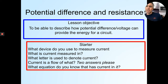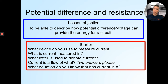Okay, it's science o'clock — time for a new lesson. Carrying on from the last lesson where we talked about current and resistance, today we're doing potential difference and resistance, and we're going to be able to describe how potential difference (voltage) can provide the energy for a circuit. To start us off, we're going to look at some things from the previous couple of lessons.